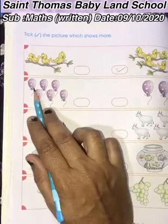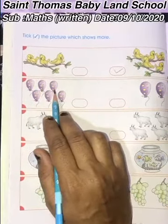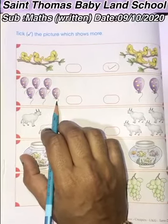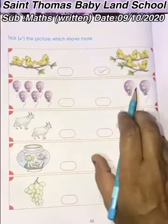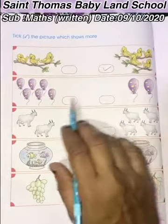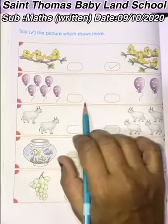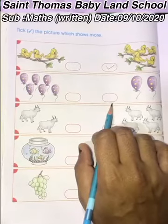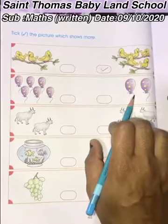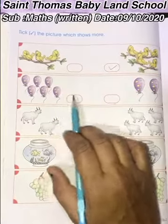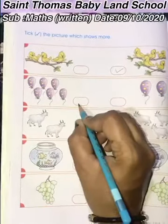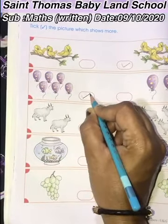Now count all the balloons. 1, 2, 3, 4, 5, 6. How many? 6, right. And this? 1, 2. So which picture do we have to tick? Here 2 balloons and here 6 balloons. So 6 is more and 2 is less. So we have to tick the more balloons.